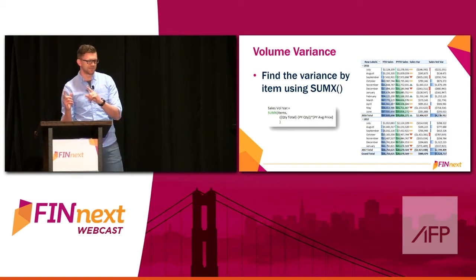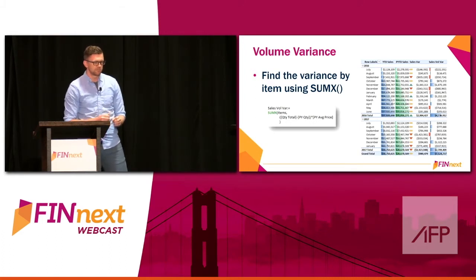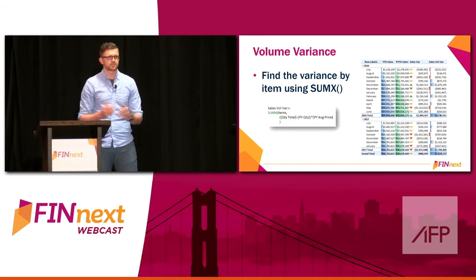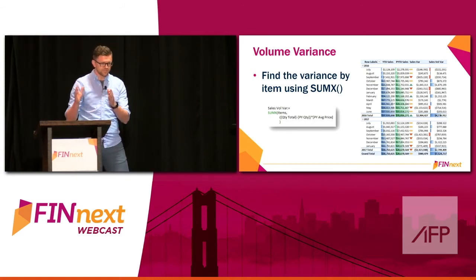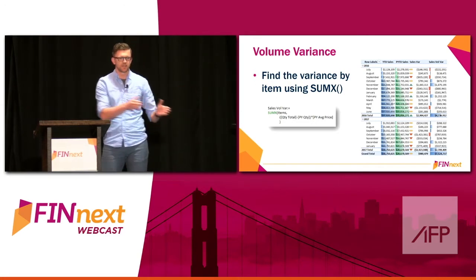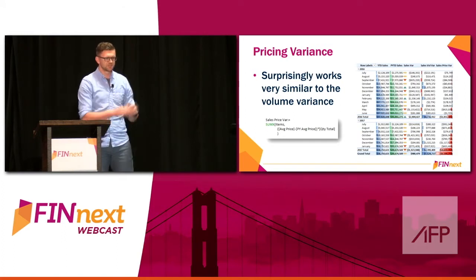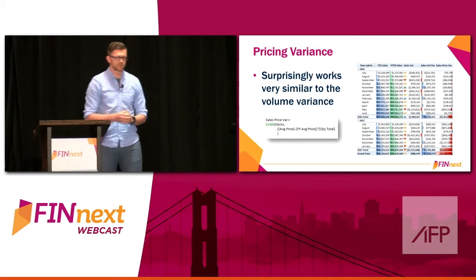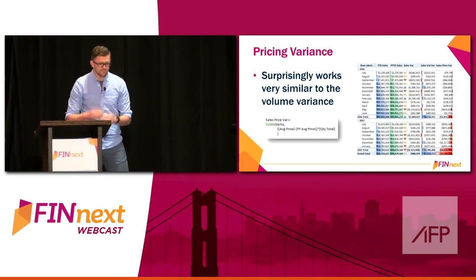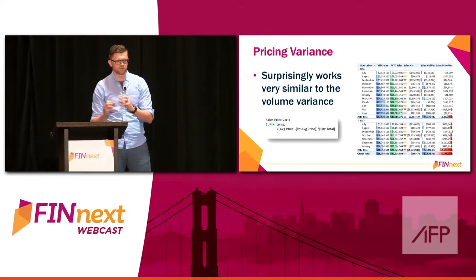Now I'm going to find the volume variance using that same SumX. We're going to take the quantity total minus last year's quantity and multiply it by the last year average price, so it tells me what my volume variance was for that year. I added some conditional formatting so you can see that. I have a total sales variance — now I'm going to add pricing, and it works very similarly: average price versus last year average price times the quantity. Now I have the two components that make up my total sales variance.